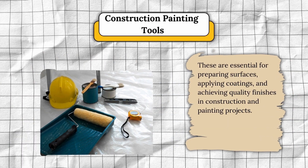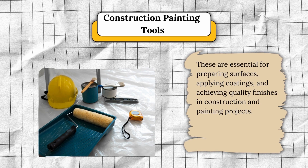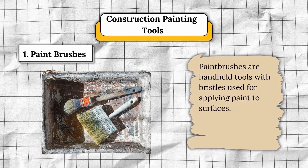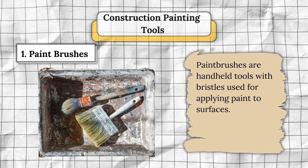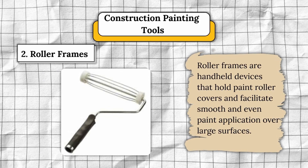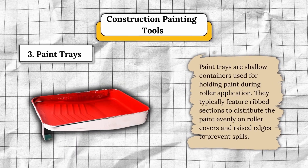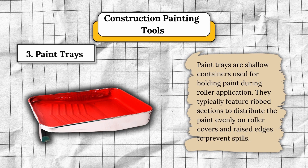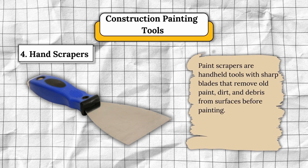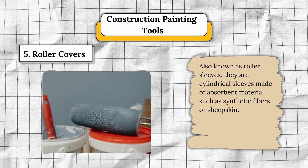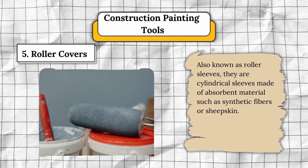The third classification is construction painting tools. These are essential for preparing surfaces, applying coatings, and achieving quality finishes. Number one, paintbrushes — handheld tools with bristles used for applying paint to surfaces. Number two, roller frames — handheld devices that hold paint roller covers and facilitate smooth and even paint application over large surfaces. Number three, paint tray — shallow containers used for holding paint during roller application, with ribbed sections to distribute paint evenly. Number four, paint scrapers — handheld tools with sharp blades that remove old paint, dirt, and debris from surfaces before painting. Number five, roller covers — also known as roller sleeves, cylindrical sleeves made of absorbent material such as synthetic fibers or sheepskin.